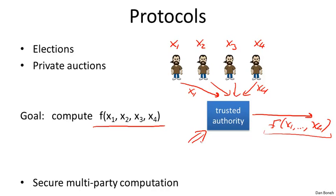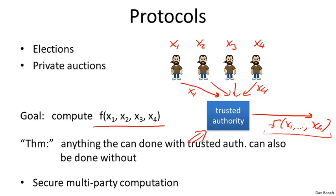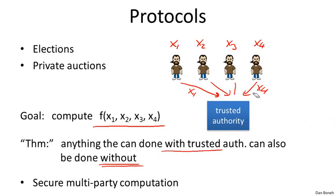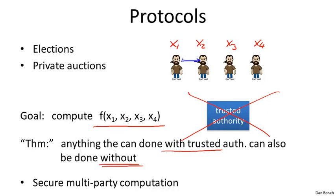There's a very central theorem in cryptography — a really quite surprising fact — that says any computation you'd like to do with a trusted authority, any function f you'd like to compute, you can also do without a trusted authority. Basically what we do is get rid of the authority entirely, so the parties don't send their inputs to any authority and there's no longer an authority in the system.